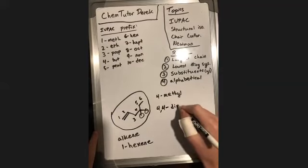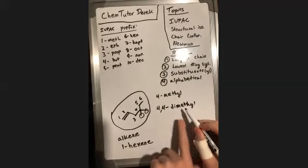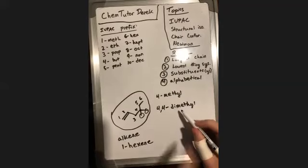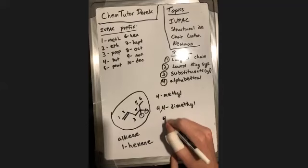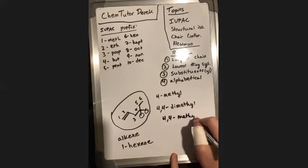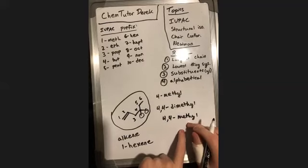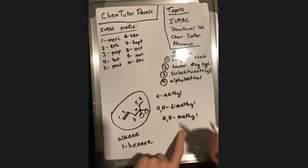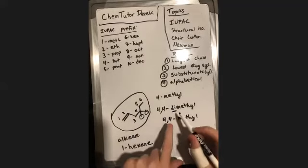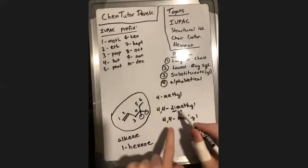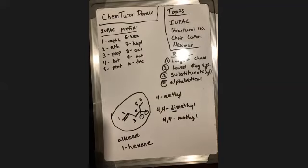This is a six-membered alkene — a hexene — and the double bond is at position one, so this is 1-hexene. We also have two single-carbon branches on the fourth carbon — those are methyl groups at position four, and there are two of them. Anytime there are identical substituents, you need an additional multiplying prefix: here it's 4,4-dimethyl. The 'di' prefix clarifies there are two identical groups at two positions, avoiding ambiguity about double bonding.